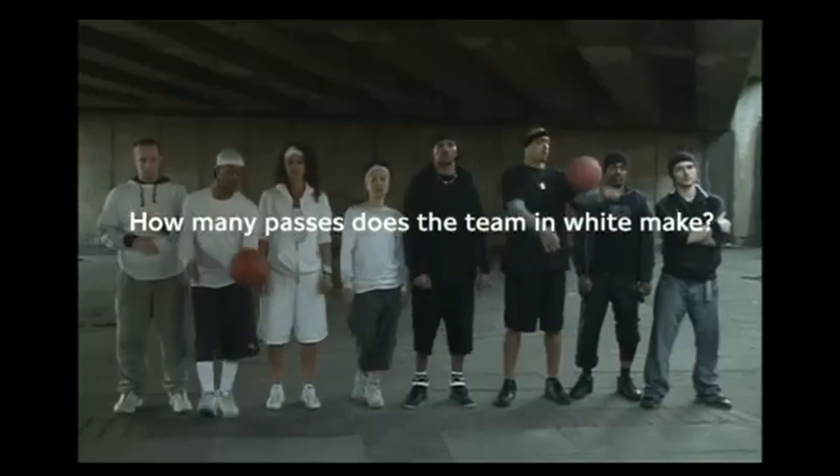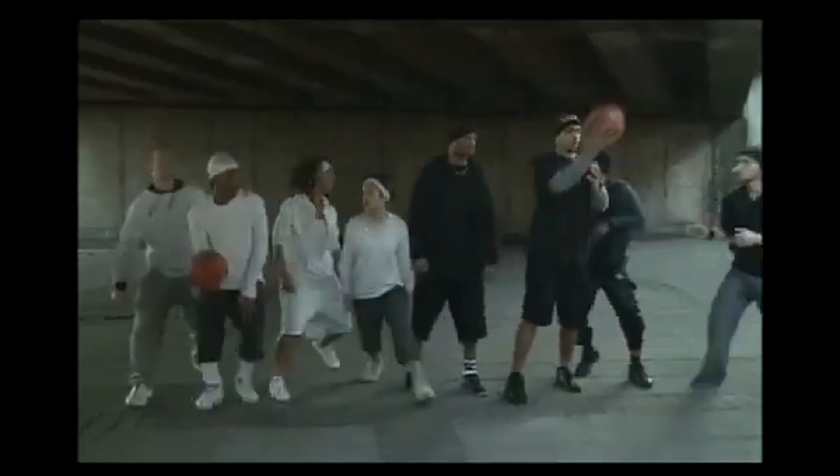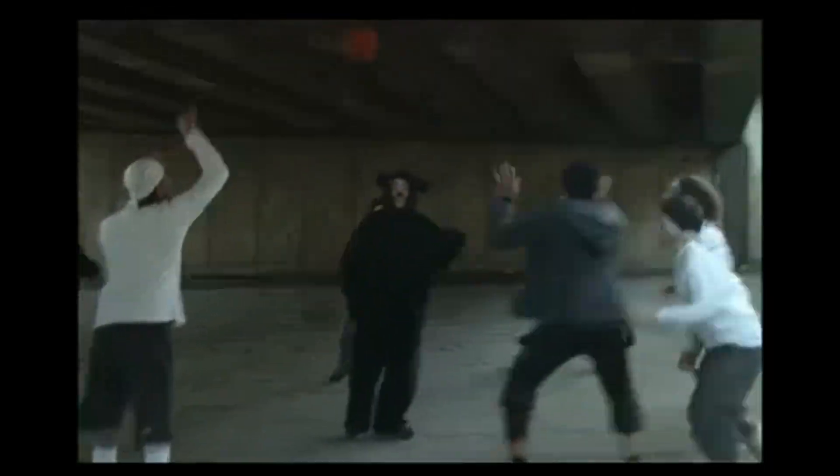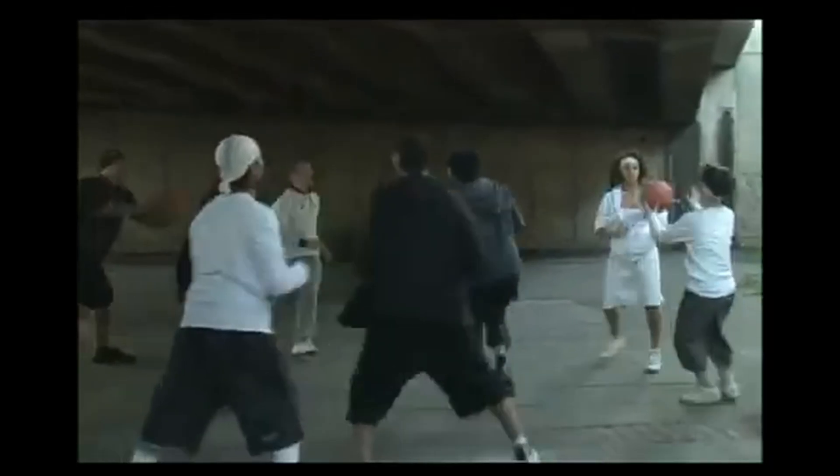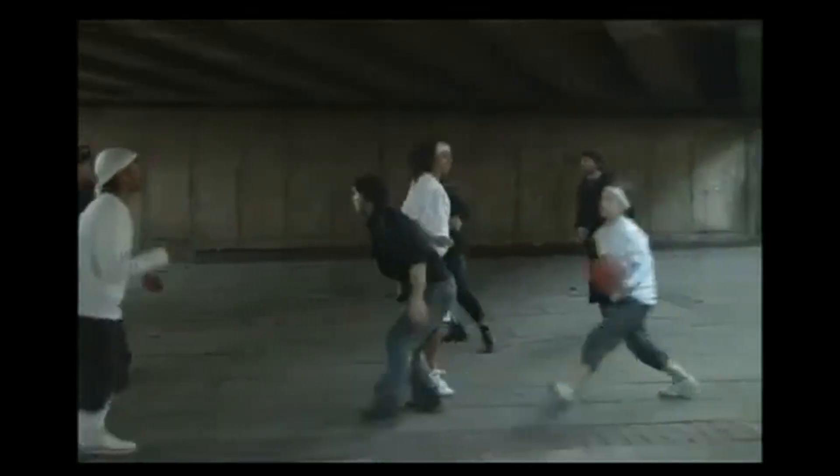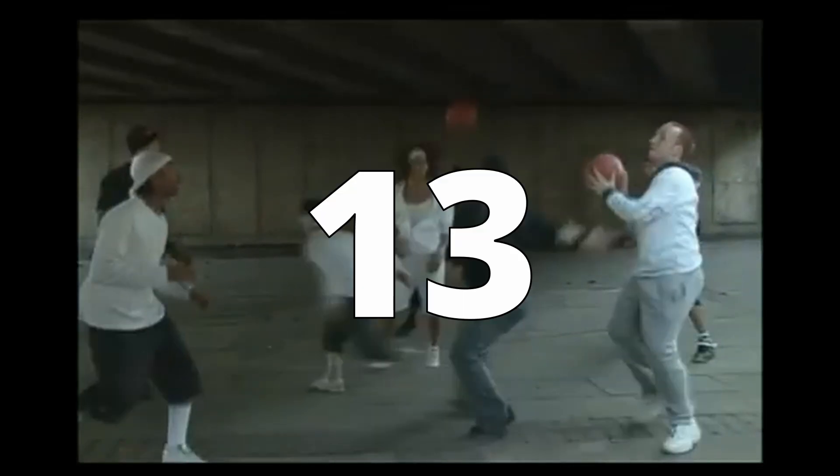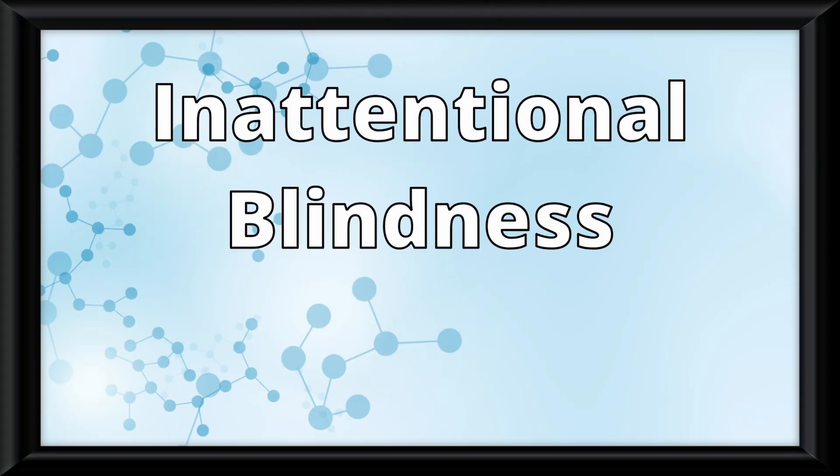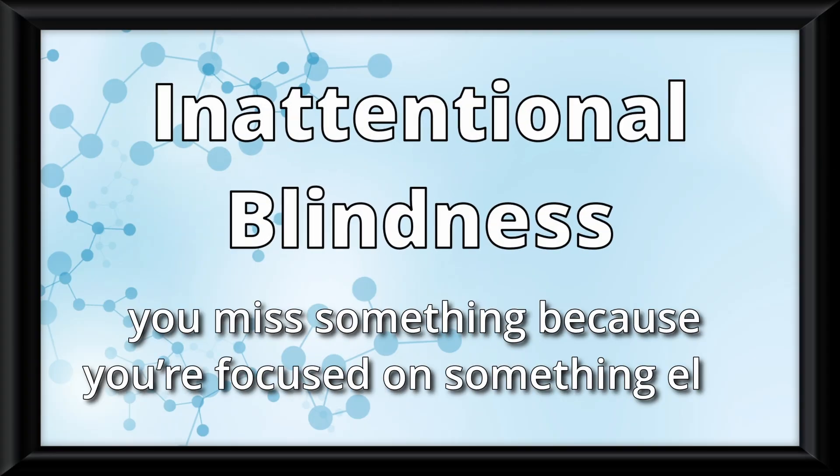Finally, I want to test something on you. Watch this video and tell me how many passes the white team makes. Yeah, 13, whatever, but did you see the bear in the middle of the video? This is called inattentional blindness, where you miss something because you're focused on something else.